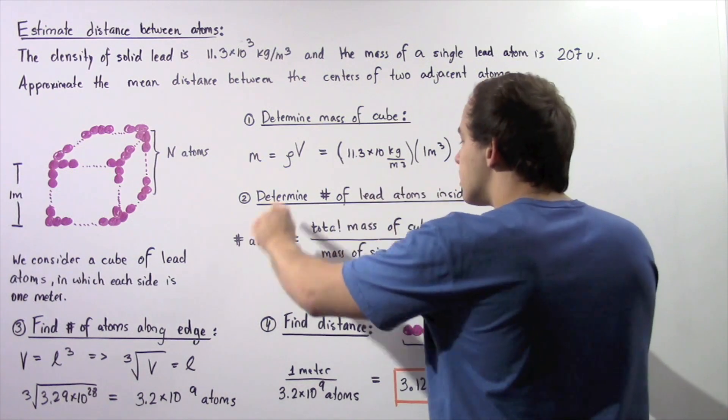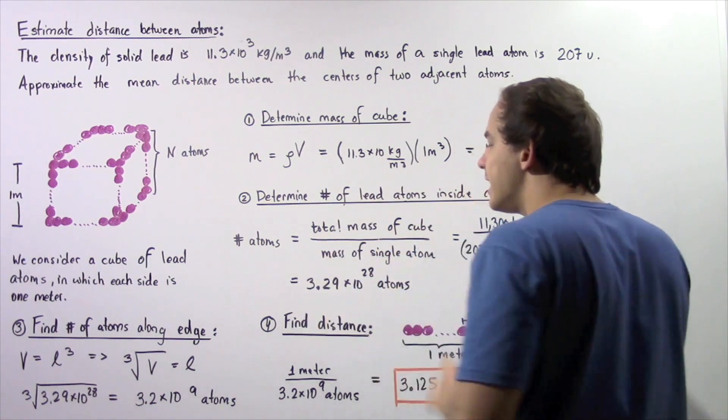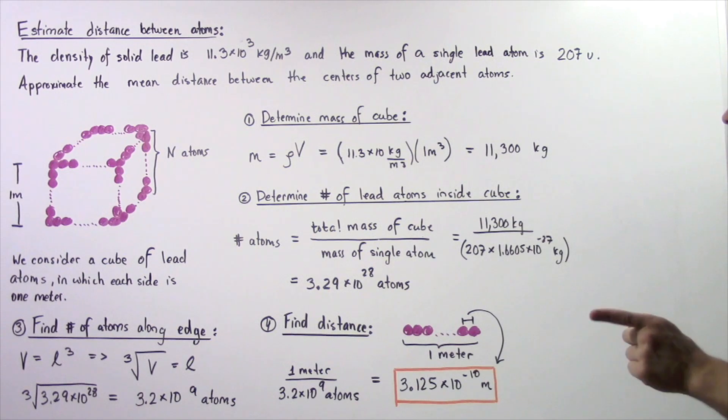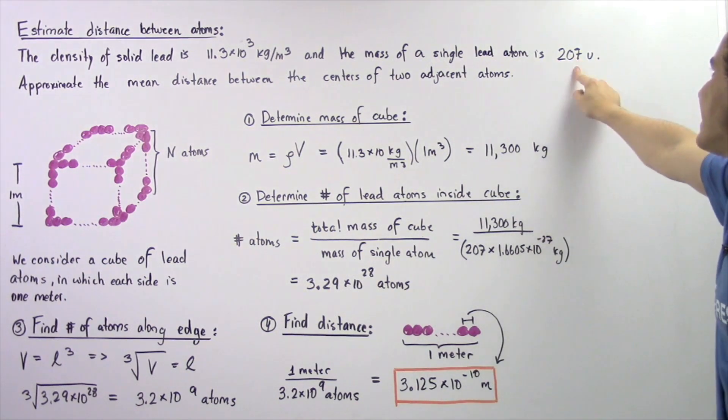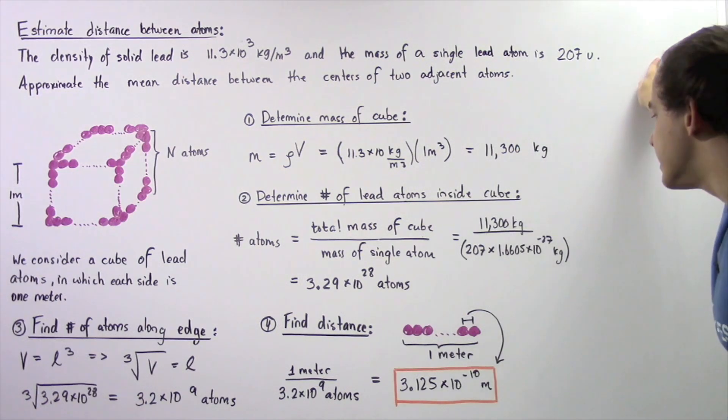we take the total mass of the cube and divide by the mass of a single lead atom. So the mass of a single lead atom is 207 unified atomic mass units.